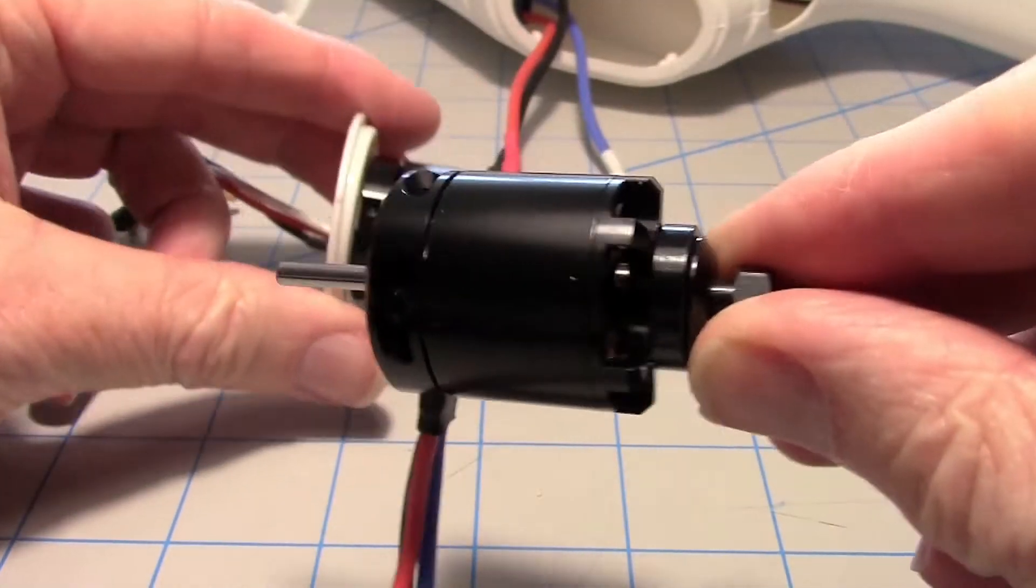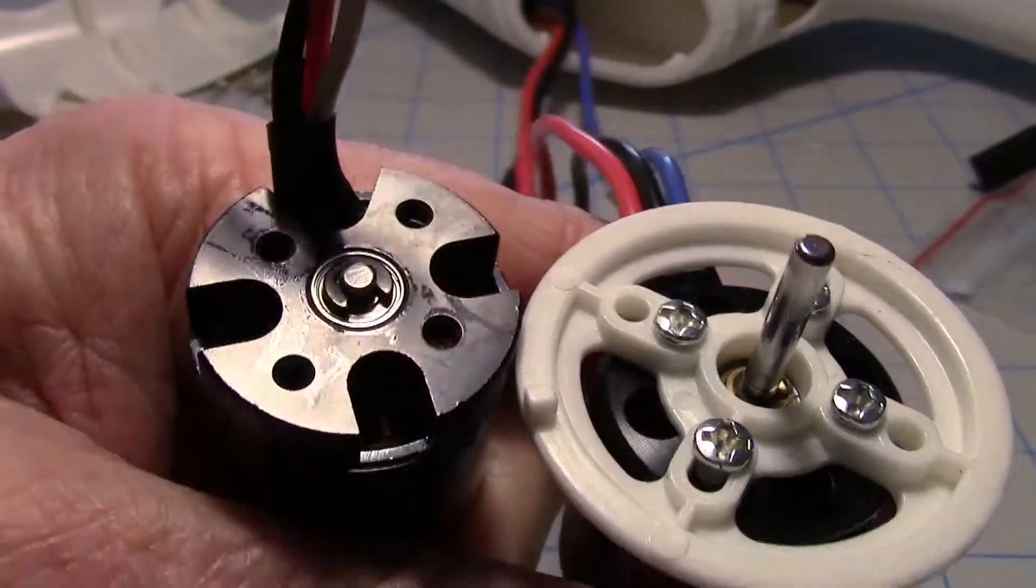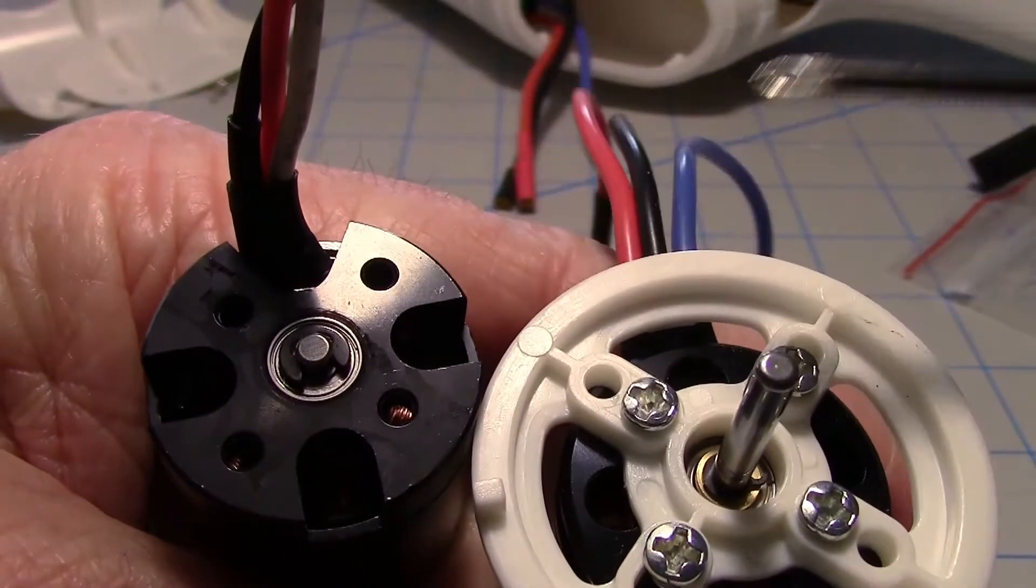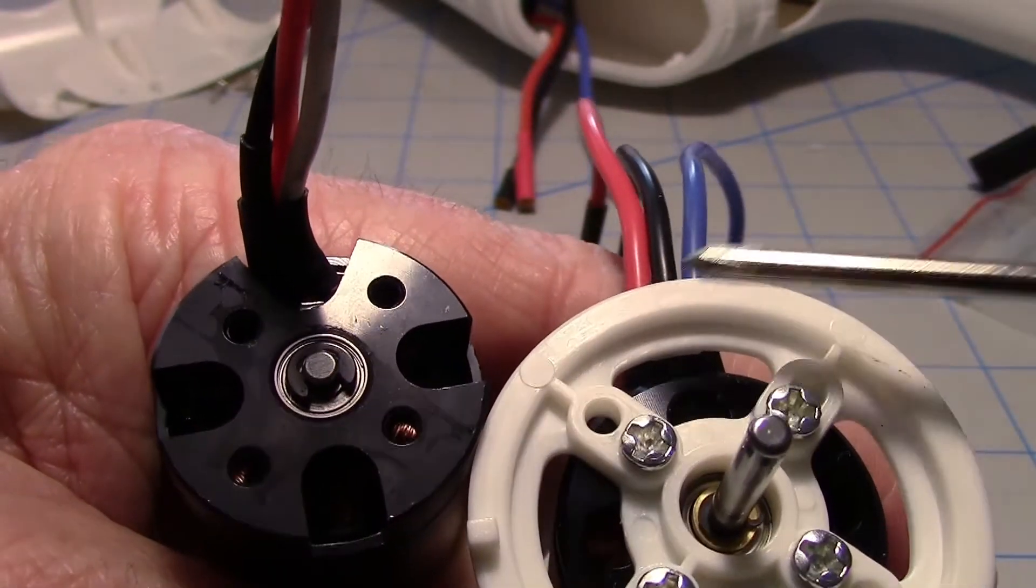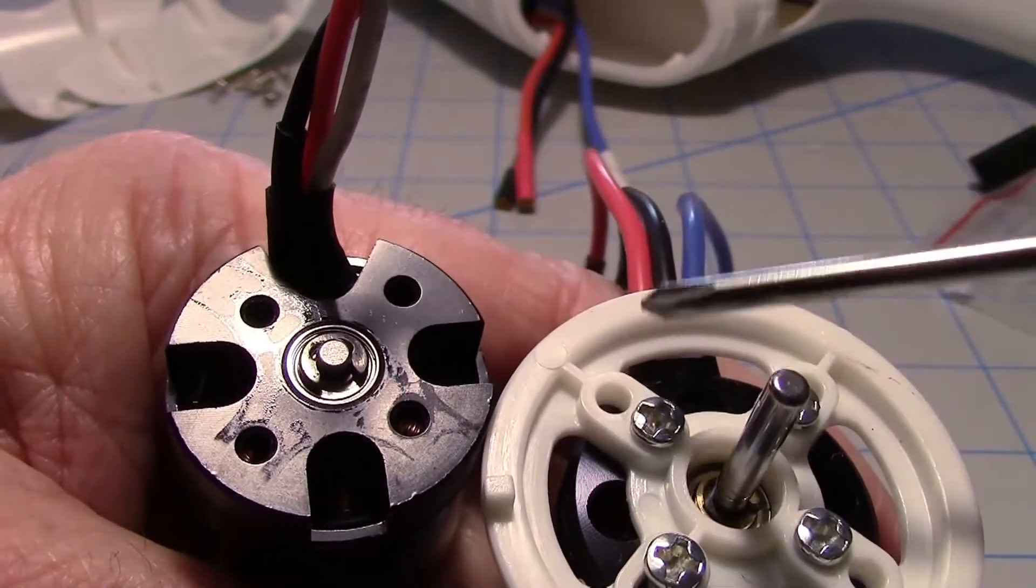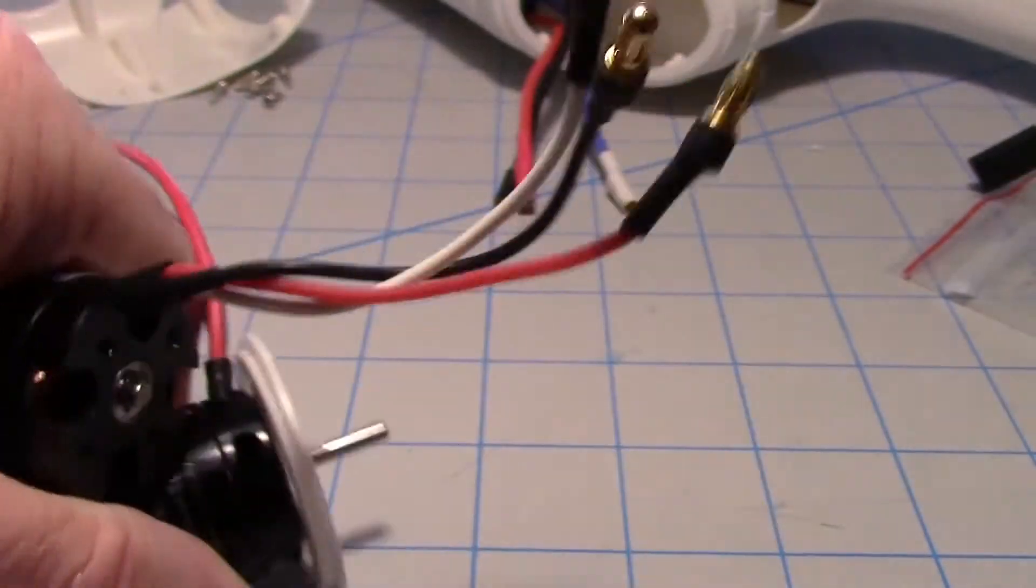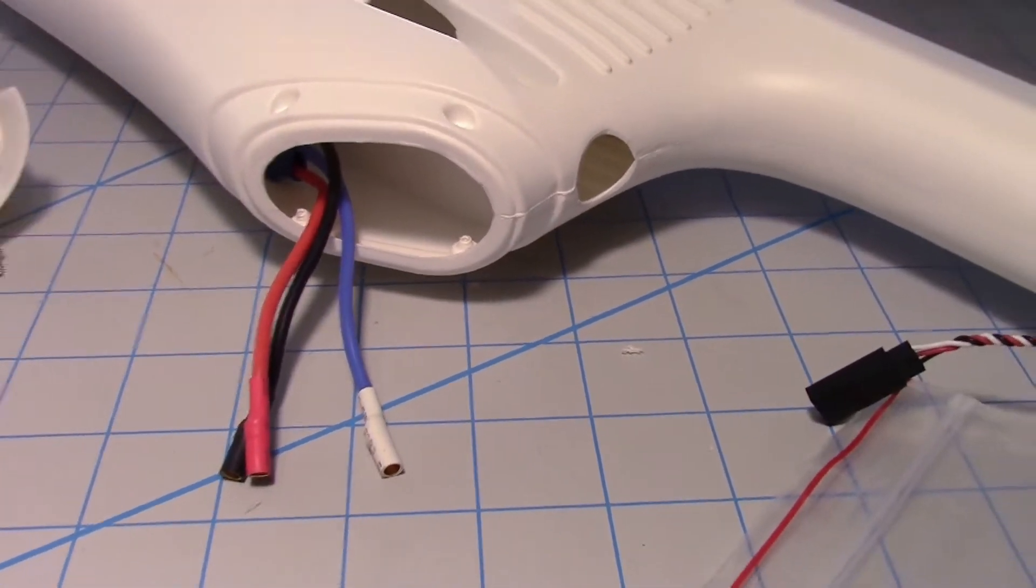Now I just need to mount the motor onto the plate right here. One thing to make note of also is that the wires don't come through the bottom of the motor on the SunnySky. They come out the side. So they'll probably have to be routed a different way. Instead of coming through this hole, we'll probably have to go outside and then back in through this hole right here. Not a big deal.